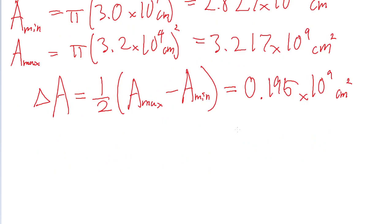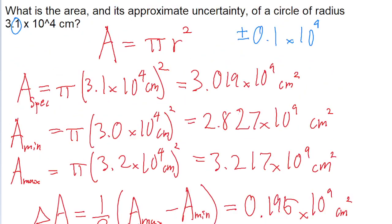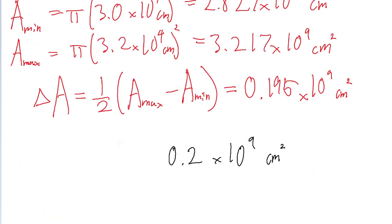Now because a lot of this is kind of just us estimating, we should probably round these down a bit. So we should take the uncertainty and round it down to just one significant figure. So that's rounded as 0.2 times 10 to the power of 9 centimeters squared. Which means we should round our specified area to the same degree. So 3.019, we'll just round that to 3.0. So that's 3.0 plus or minus 0.2 times 10 to the power of 9 squared centimeters.